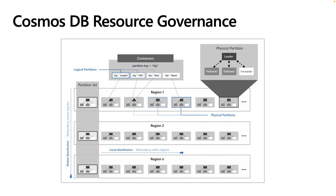Before we dive deeper into database versus container level provisioning of request units, we need to discuss how partitioning works in Cosmos DB. Cosmos DB partitions your data with logical and physical partitioning. Choosing a good partition key is crucial for even distribution of your workload across all partitions of a container. A logical partition consists of a set of items that have the same partition key. In our example here, the partition key is city, so each unique city name would be in its own logical partition.